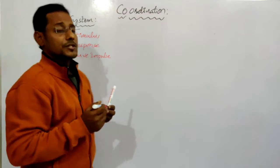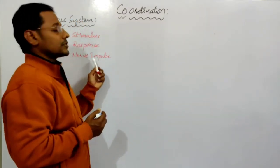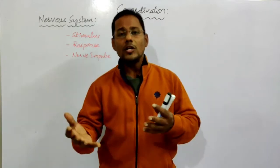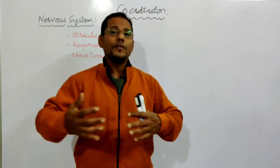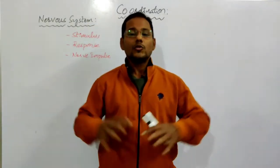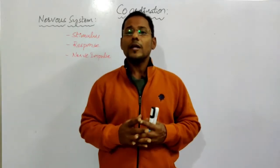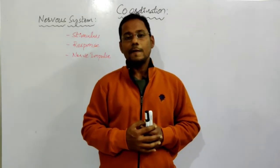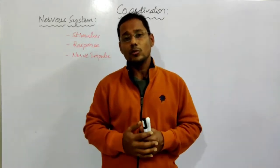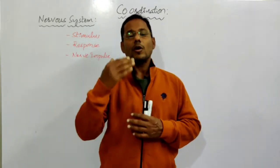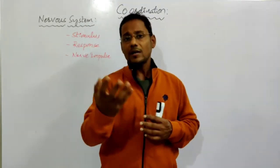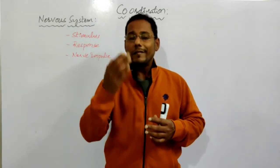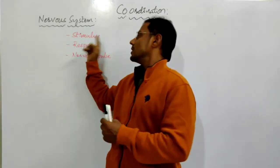We use stimulus, response, and nerve impulses in both the nervous system and the endocrine system. Stimulus means any information, knowledge, or any change around us or in the environment which we receive into our brain. Any change happening around us or inside our body — that information is called a stimulus.